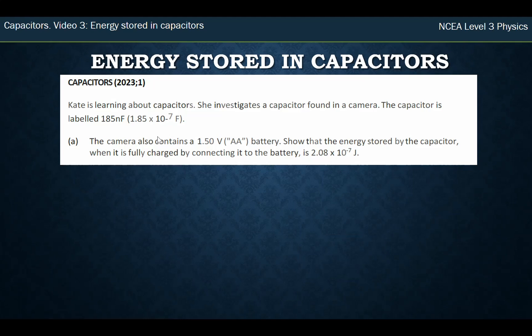The camera's connected to a 1.5 V battery. Show that the energy stored in the capacitor, when it's fully charged, is 2.08 × 10⁻⁷ J. So this is an example where if you go to write down the formula you're given, E = 1/2 QV, and you say, well, what am I given?